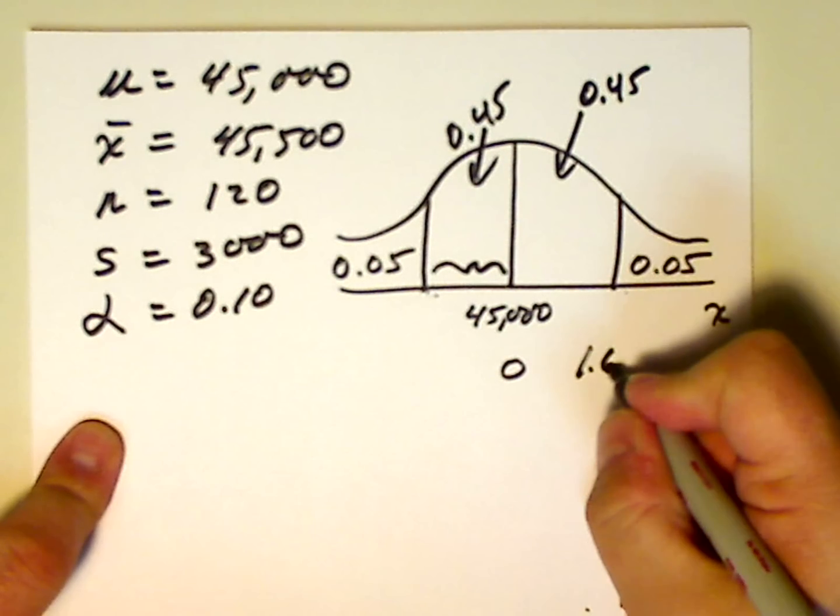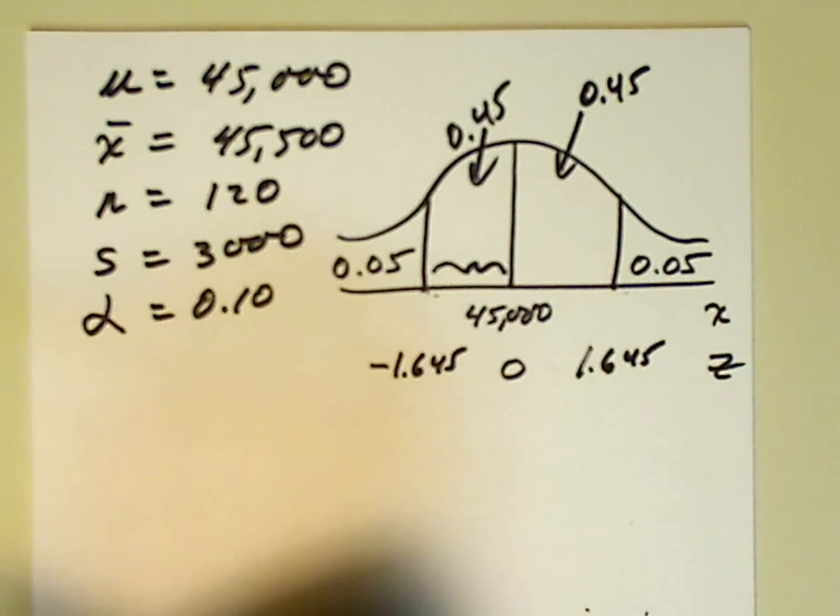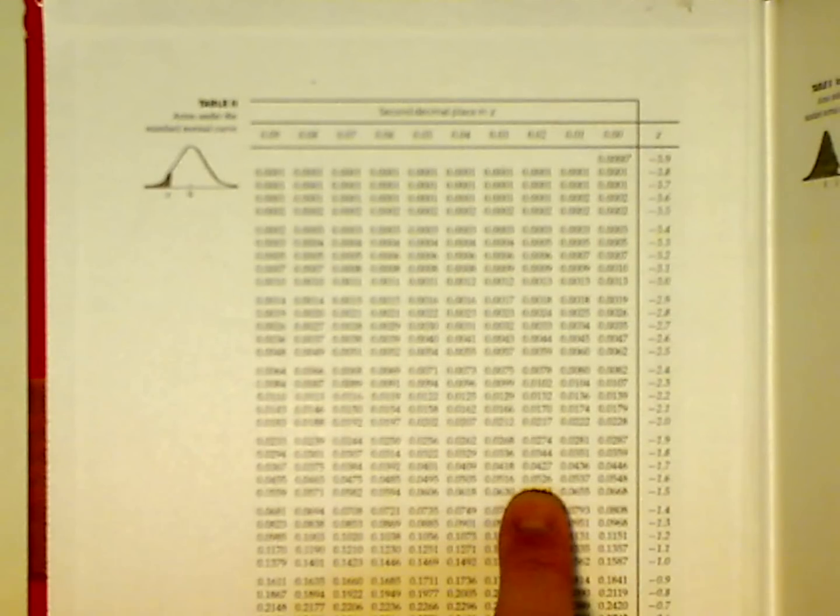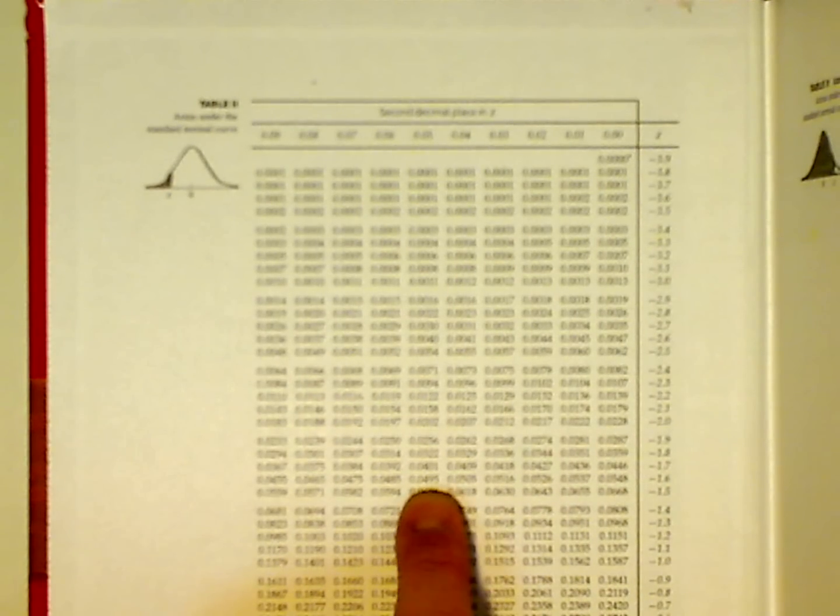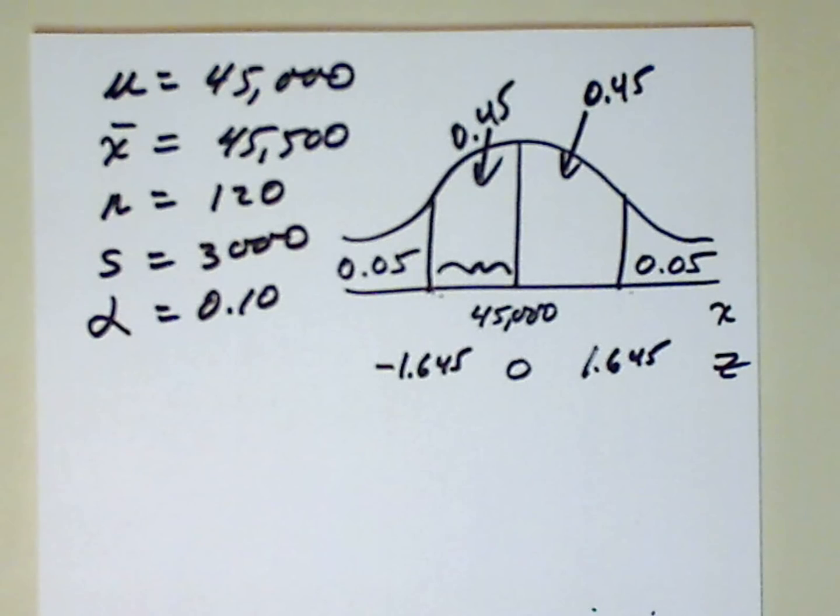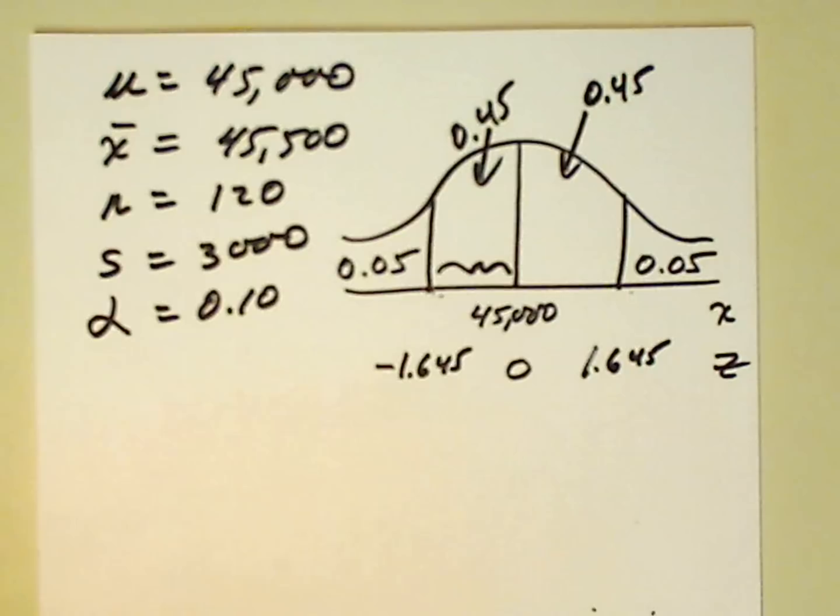So, 1.645 here, negative 1.645 here, on the lower end of the curve. And if we wanted to, we could use this table. Well, we could go to 1.6, and we see that in between 4 and 5, we have 0.0495 and 0.0505. It's right in between those two points. We're going to get the same z value, regardless of the way in which we find it.